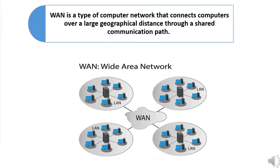Lastly, let's talk about Wide Area Network. Remember that there are other types of computer networks. WAN is a type of computer network that connects computers over a large geographical distance through a shared communication path. It is not restrained to a single location but extends over many locations. WAN can also be defined as a group of local area networks that communicate with each other. The most common example of WAN is the Internet.